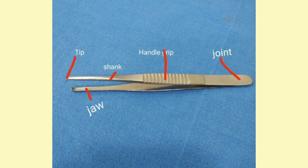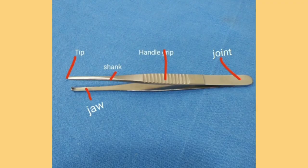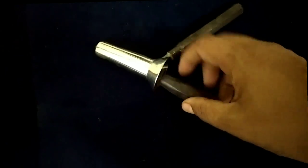In the dissecting forcep we can see the parts of the instrument. The ending point which joins the two parts of the instrument is the joint. Near the joint there is a handle grip which has a grooved surface. After the grooved surface there is the blade portion called the shank. It has a jaw, and at the tip it may be plain or toothed. These are the features of dissecting forceps; they are of two types: plain and toothed.